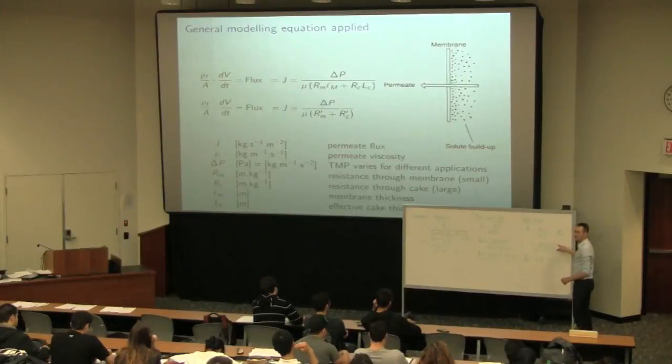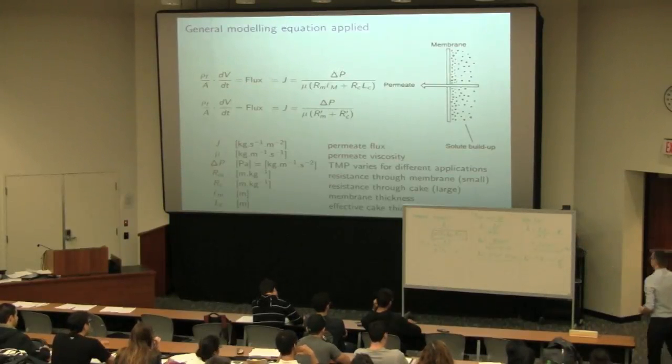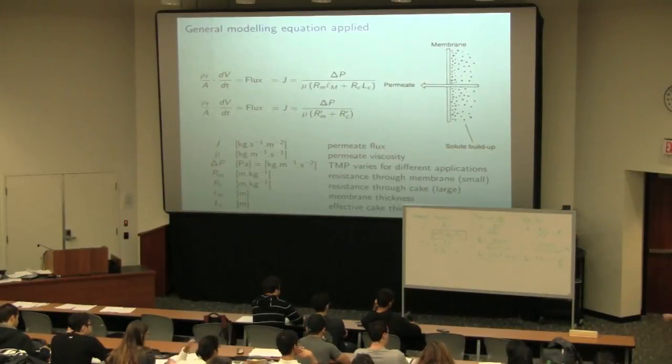This time we're using a different pressure drop. We can tell that RC dash is 9 times 10 to the 10. Contrast that to the membrane's resistance, which is 5 times 10 to the 8. It's two orders of magnitude greater.